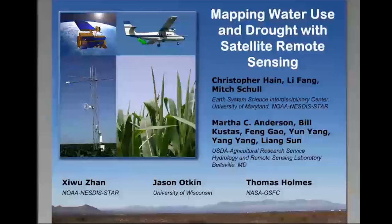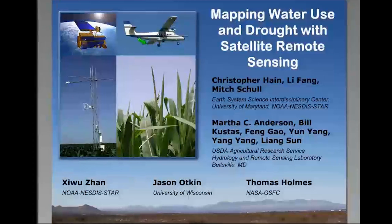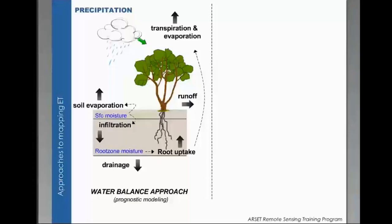We all work at ESSEC at University of Maryland and also as visiting scientists at NOAA. And then Martha Anderson and Bill Kustas and their team at USDA Hydrology and Remote Sensing Lab in Beltsville, and then Jerry Zahn at NESDIS, Jason Otkin at Wisconsin, and Thomas Holmes at NASA Goddard. I will walk you through essentially an overview of our modeling system, which uses remote sensing observations of land surface temperature and vegetation to get at evapotranspiration, and some of the applications that we have developed based on our model.